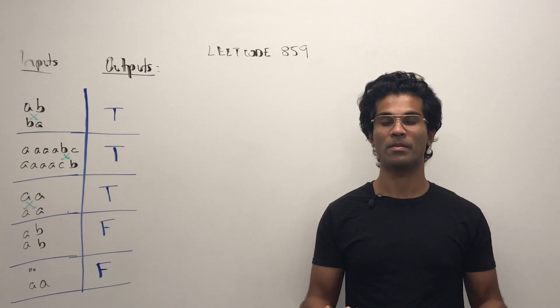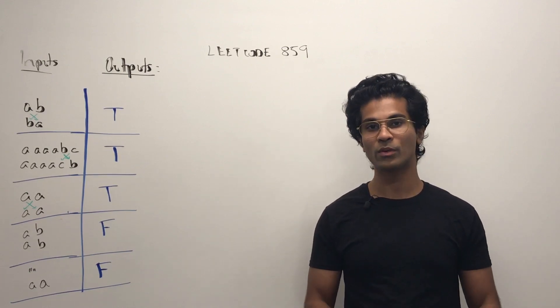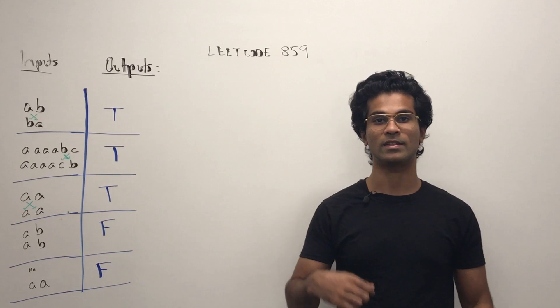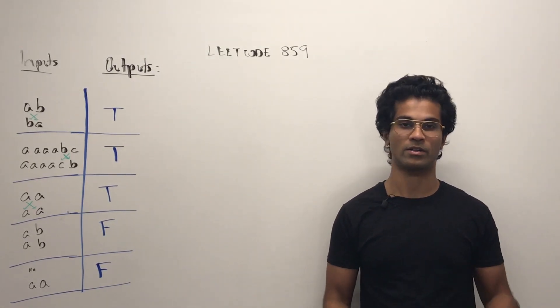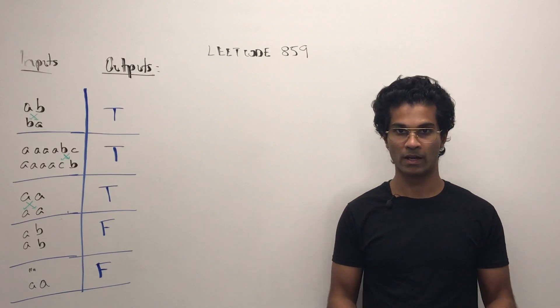Our job is to find true or false whether we can take one of the input strings and turn it into the second one by swapping at most two characters. So we have to swap the characters.